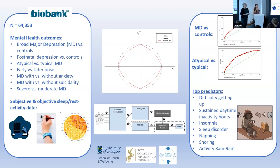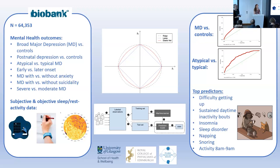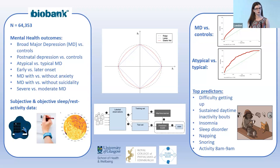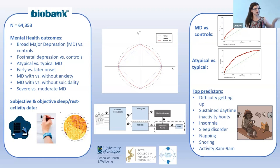Question from Graham Murray, Cambridge: Do you have enough power to look at incident depression? That measure of inactivity in the mornings clinically strikes one as a very useful measure. We did look at incident cases — within this subset there were about 320 cases where there was a gap of at least a year between all the data being collected and their estimated first episode of depression. Reassuringly, the performance was very similar to the overall depression versus controls, with AUC of about 0.67, and the predictors were very similar as well.